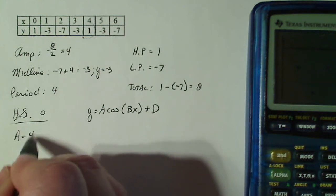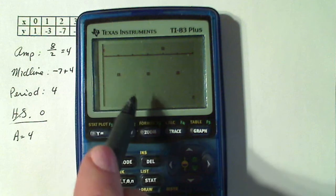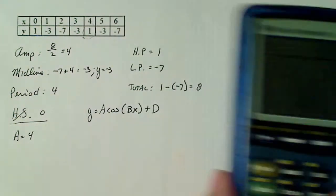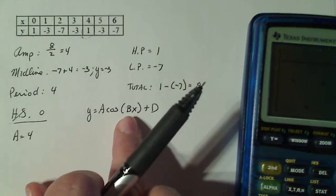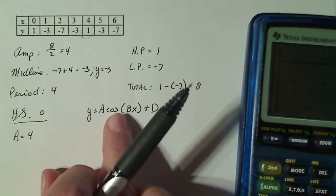I can say my amplitude is going to be positive four. Because the data starts at the high point and goes downward, that means my a value for this graph is going to have to be positive. Remember, negative a just turns it over the midline, but we don't want to do that right here.